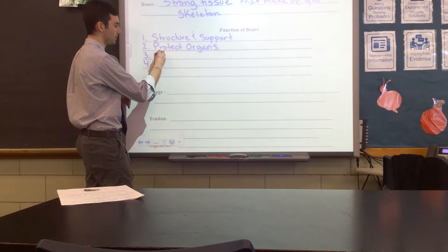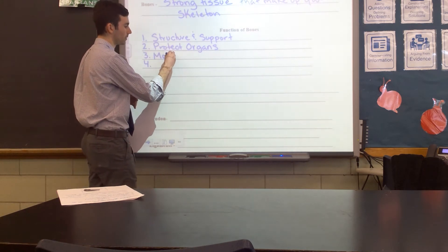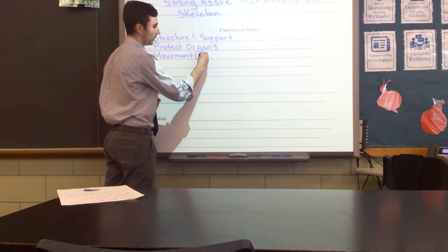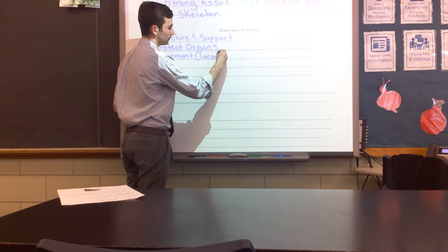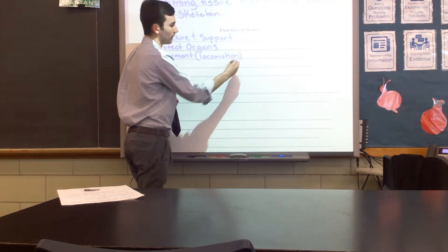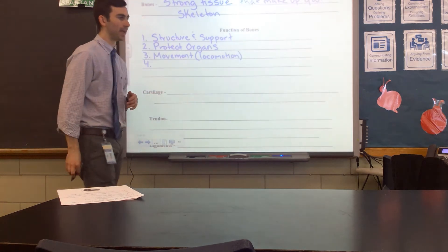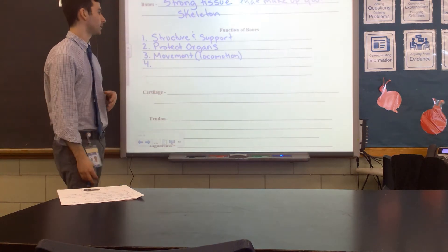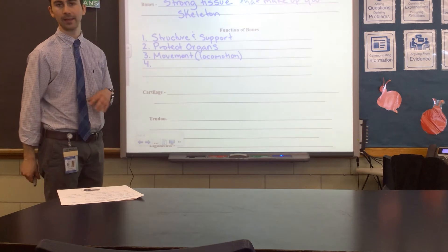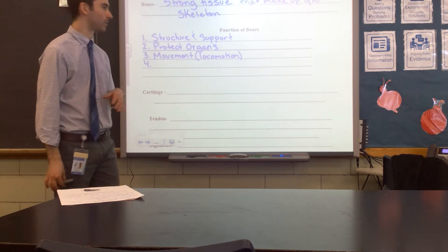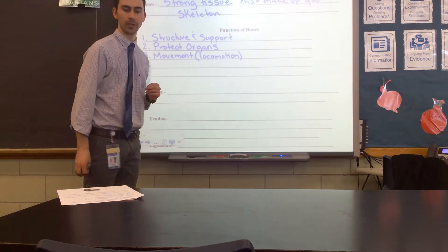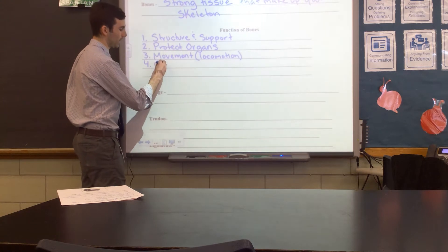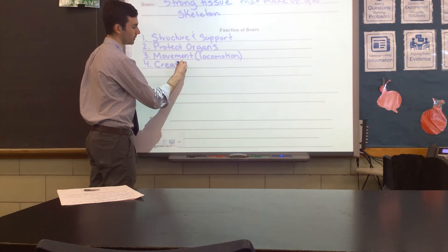The next function is that we use our bones for movement, or locomotion — they allow us to walk, talk, and move our arms. And finally, a lesser-known function that might be tricky for your unit test: bones actually create blood cells for us.